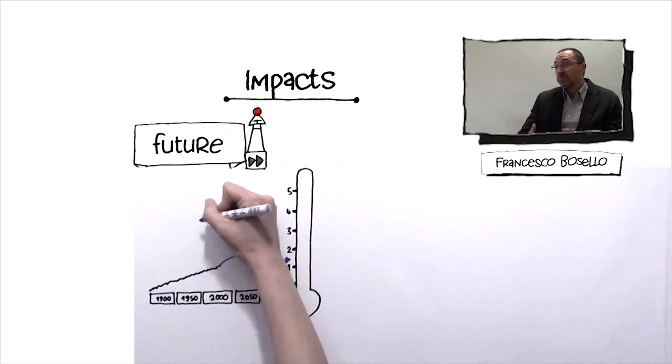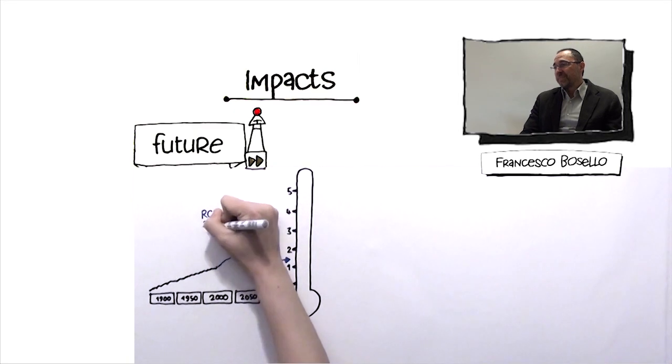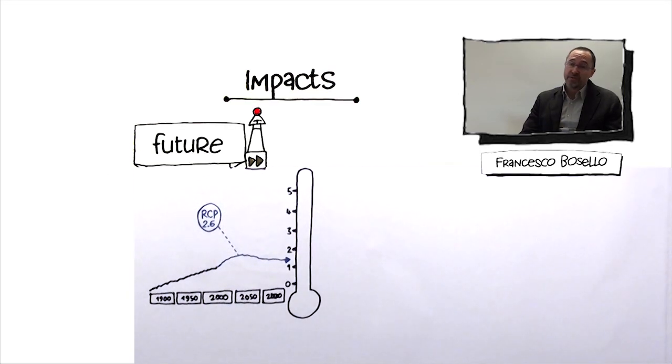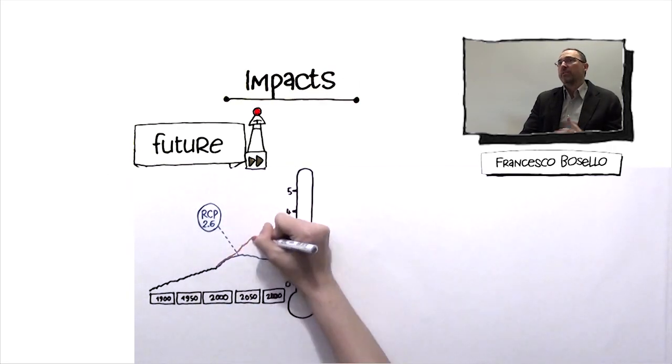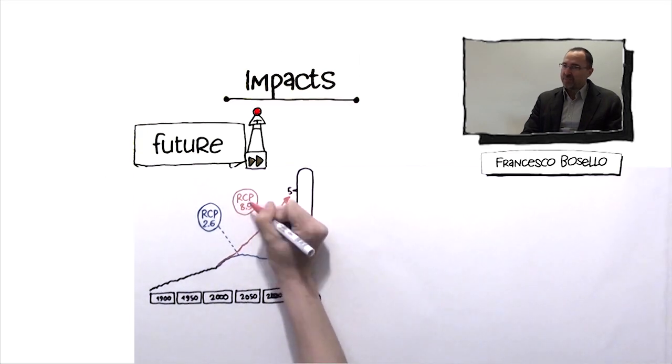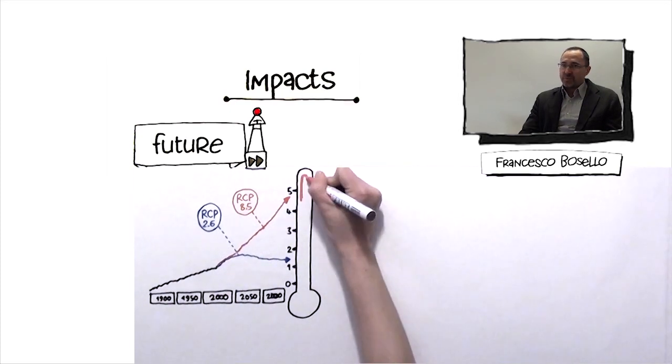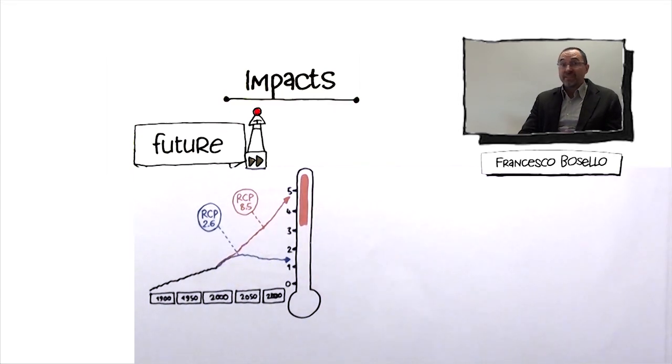Within the century, the RCP 2.6 and 8.5 scenarios differ significantly. RCP 8.5 is the extreme in the other sense, the more pessimistic if we would like to say it this way, assuming that by the end of the century temperatures could increase between 4 and 6 degrees Celsius compared to the pre-industrial level.